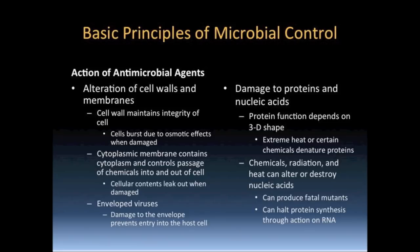Agents that disrupt the envelope of an enveloped virus may not affect naked viruses. Naked viruses are more resistant to harsh environmental conditions because they lack an envelope. As we have seen this semester, the metabolism of a cell is dependent on the action of enzymes, and most enzymes are protein in nature. We have also seen that the information for the synthesis of proteins is held within the genetic code, which must first be transcribed and then translated to produce proteins. Therefore, the metabolic activity of a cell may be inhibited by causing damage to proteins and nucleic acids. Damage may be caused by heat, chemicals, and radiation. These agents act against the chemical structure by denaturing proteins and nucleic acids.